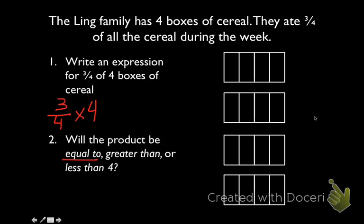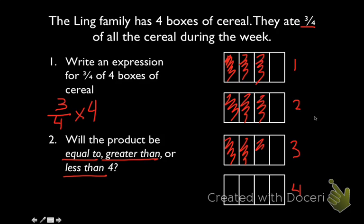Then we're asked: will the product be equal to, greater than, or less than 4? Let's draw a model — here we have 4 boxes of cereal, and let's shade in 3 quarters of all the boxes. We've shaded in 3 quarters of all the cereal, and about 1 quarter has not been eaten yet, which means our final product is going to be less than 4.